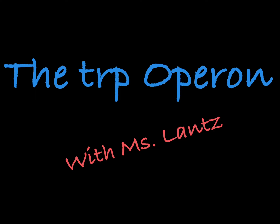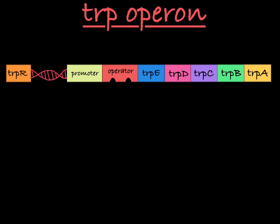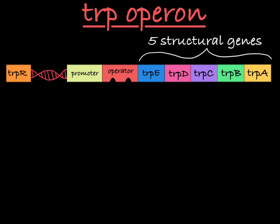In this video, I'll discuss how the trp operon functions in E. coli. This is what the trp operon looks like. You can see that it contains five structural genes: trpE, trpD, trpC, trpB, and trpA.